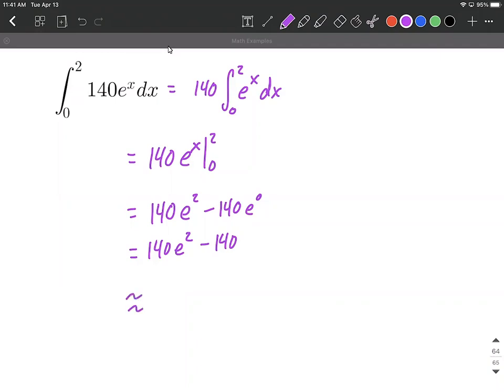Or we can put this into our calculator and get an approximation. It's approximately 894.468, rounding to three decimal places.